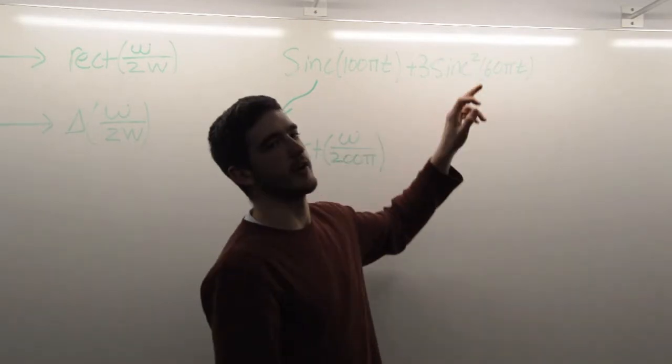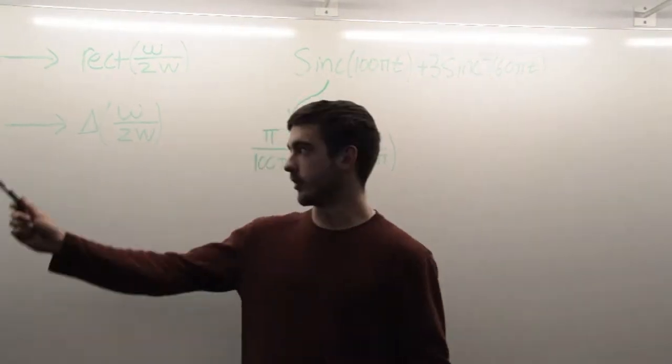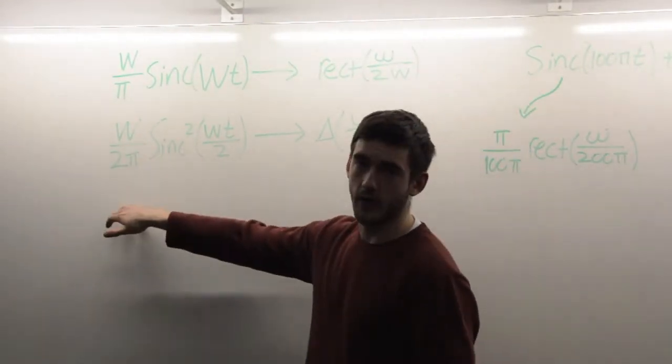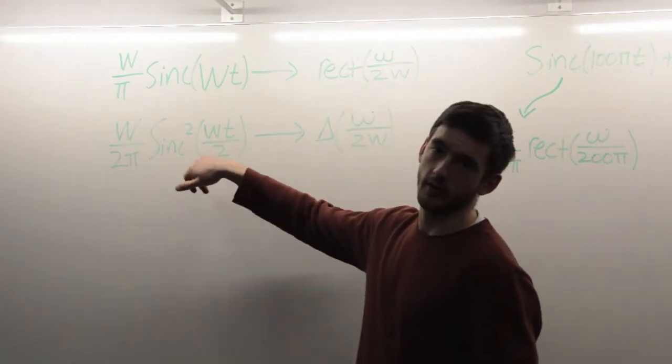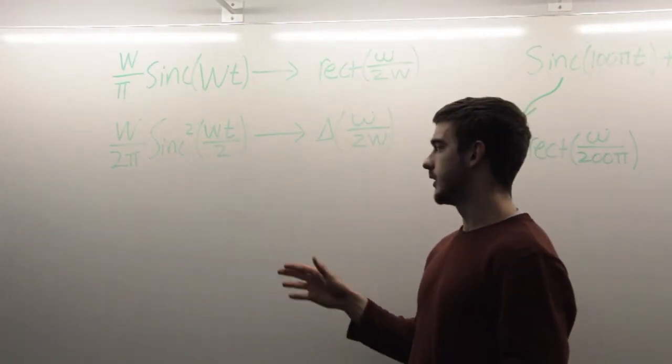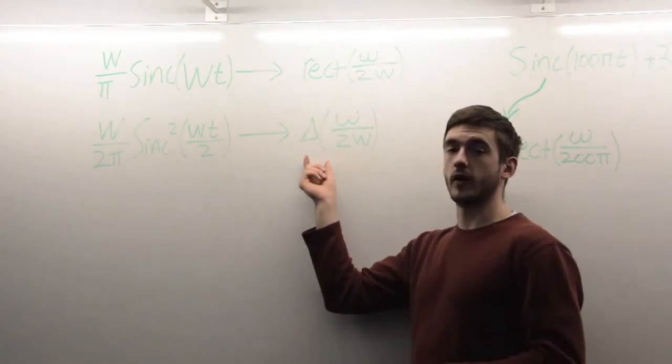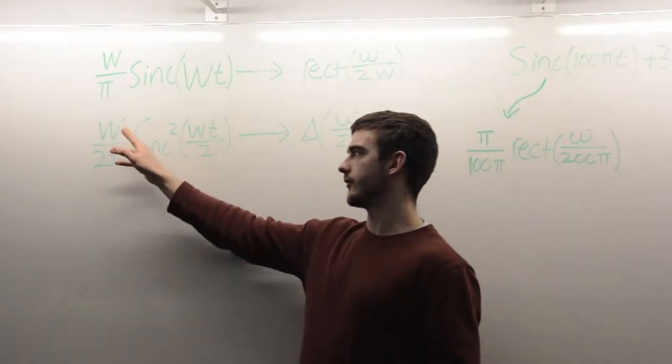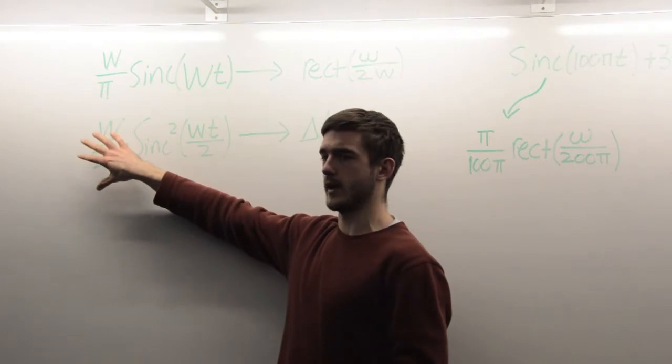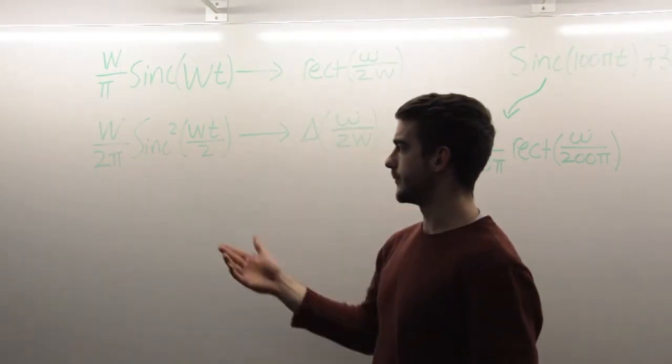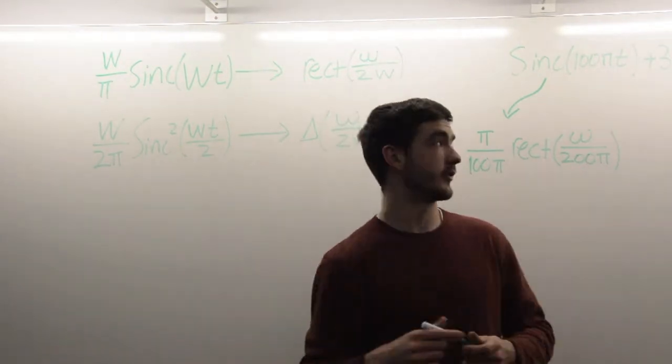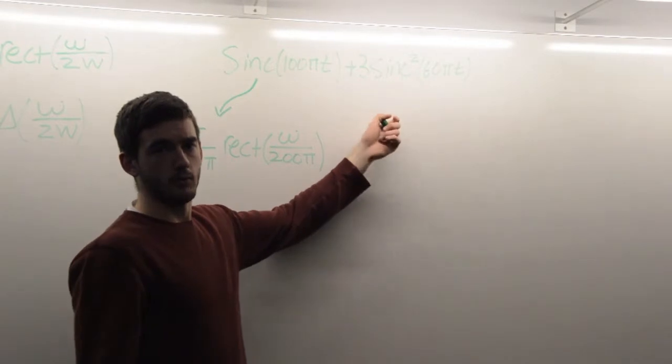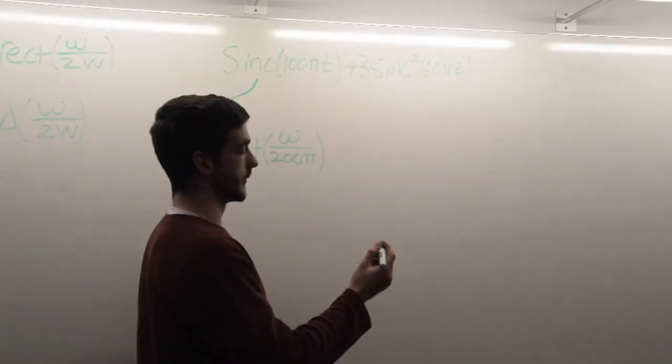Now we have 3 sinc squared of 60 pi times t. If we look over here, we have the next equation for sinc squared. We have w over 2 pi times sinc squared of wt over 2. That Fourier transform is the triangle function of omega over 2w. Again, we have this weird constant out front. Ours is a 3, so we know that we need to, well, we can pull the 3 out. If you pull the 3 out, then you basically have a 1 out front, which means we're multiplying by 2 pi over w.